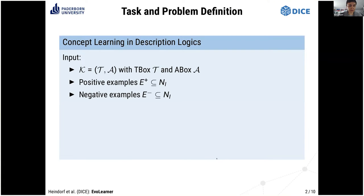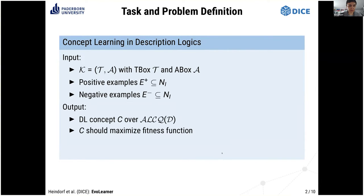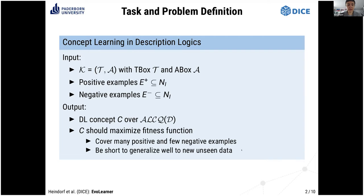More formally, we want to learn concepts in description logics. Our input is a knowledge base K, which consists of a T-box T and an A-box A, and we are given positive and negative examples — individuals in the knowledge base. Our output is a concept in description logics, in this case over the description logic ALCQD. That means we support negation, intersection, union, cardinality restrictions, and data properties. To find such a concept, we use a maximizer fitness function whose overall goal is to cover many positive examples, few negative examples, and produce short concepts that generalize well to unseen data.